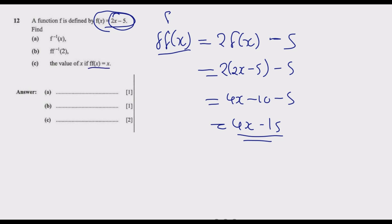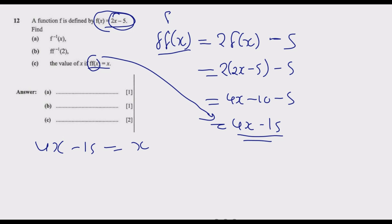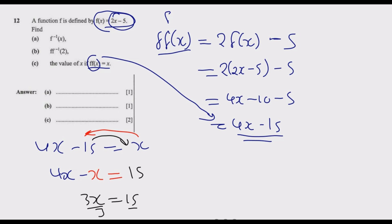Setting f(f(x)) = x, we get 4x − 15 = x. Moving x to the left gives 4x − x = 15, so 3x = 15. Dividing both sides by 3, x = 5. That is how you solve this question to get the 2 marks.